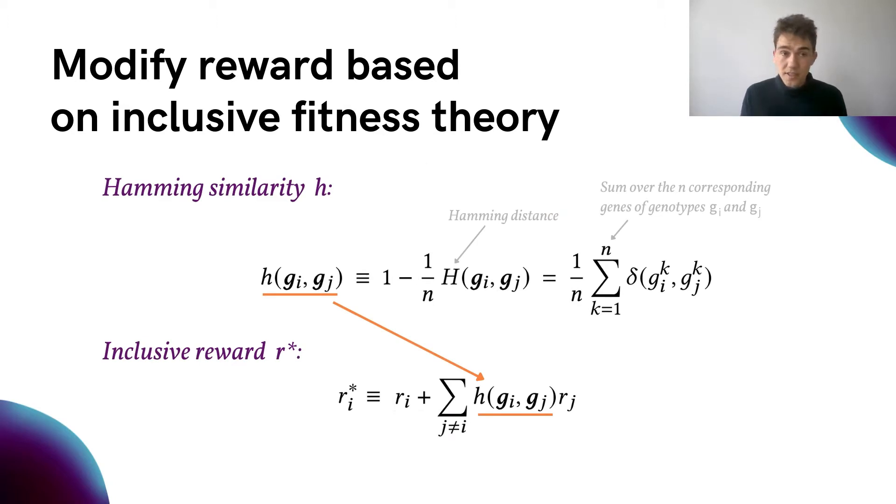To quantify genetic relatedness we propose a metric of information similarity between genotypes. In information theory, the Hamming distance between two sequences is the number of positions at which corresponding entries are different, measuring the amount of substitution needed to change one sequence back into the other. Starting from the Hamming distance, we designed a Hamming similarity metric expressing the genetic relatedness between two agents as a real number between zero and one.